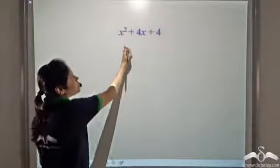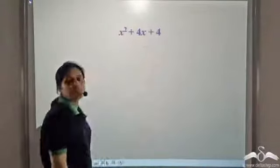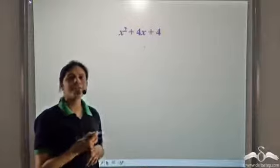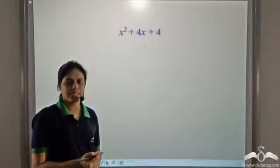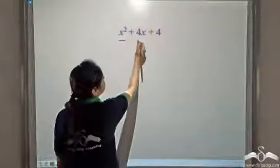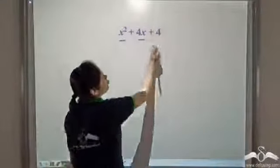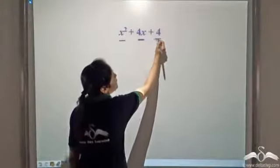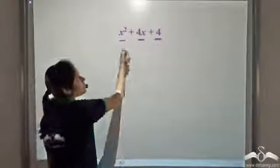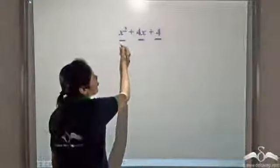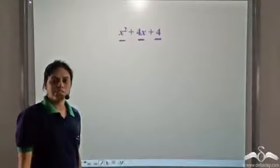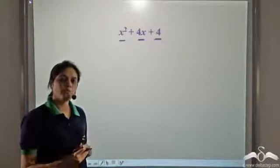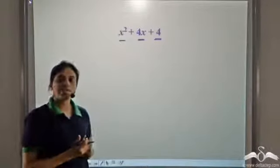We have an expression x² + 4x + 4 and we need to factorize it. First, let us check whether there is anything common among all three terms. The first two terms have x common but there is no x in the third term. This term and this term have 4 common but there is no 4 in the first term. So we can't find anything common among all three terms. Also, the number of terms is 3, so we cannot form groups of 2 to find a common factor.